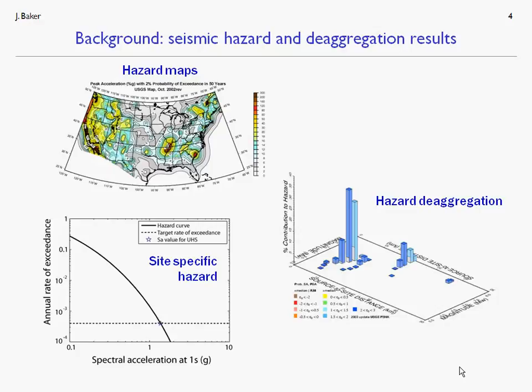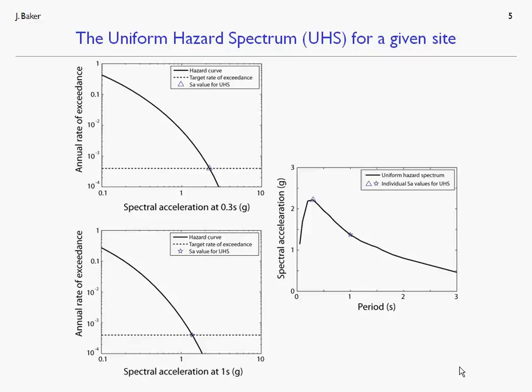Another piece of information that goes along with the rate of exceedance of any particular spectral acceleration amplitude is what's called de-aggregation. This figure shows, for a given spectral acceleration amplitude, the distribution of magnitudes, distances, and a third parameter, epsilon — the distribution of these three parameters associated with ground motions having that spectral acceleration amplitude. We'll assume all of that's available and that you have some level of familiarity with those three concepts.